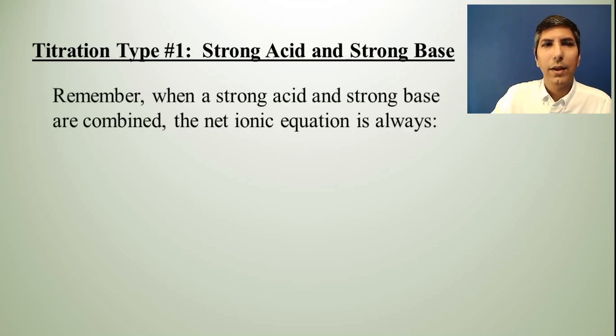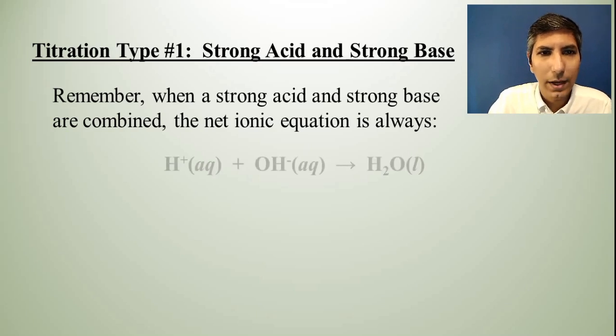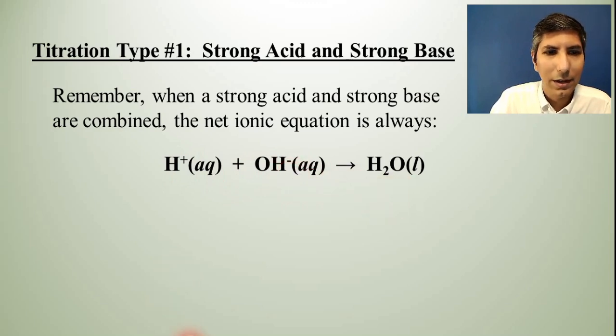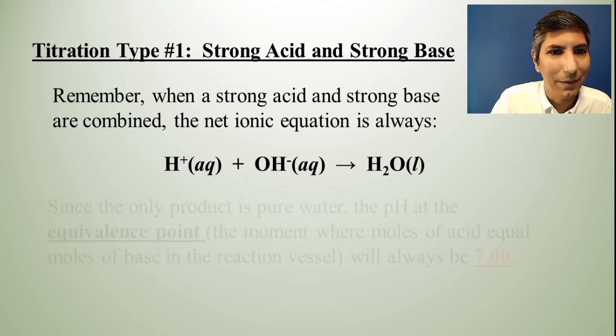Don't forget that when you add a strong acid to a strong base, the net ionic equation is always the same. This is just like we did in our last video in section four. A strong acid, strong base will always be H plus plus OH minus yields water. So that makes it a little bit easier because you know that the net ionic equation is always that. So you just write that down.